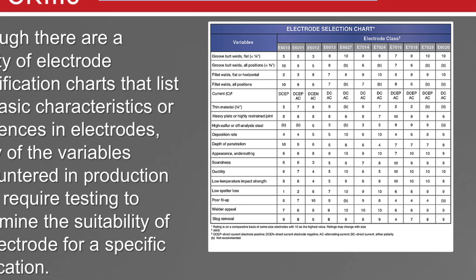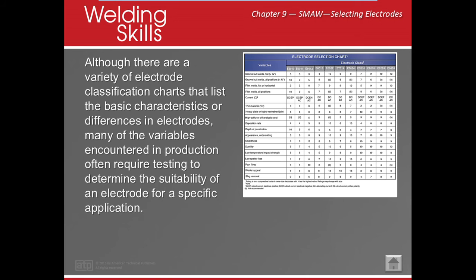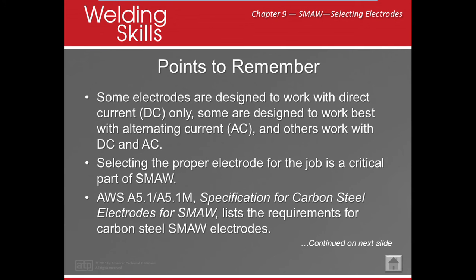Using the chart, you can choose a rod that helps accomplish what you're trying to do. For example, if you have an open root or poor fit-up, the chart might show 6012, 6011, or 6010 as top options. If you can only run DC electrode positive, you narrow it down further — it tells you what you can and can't use.